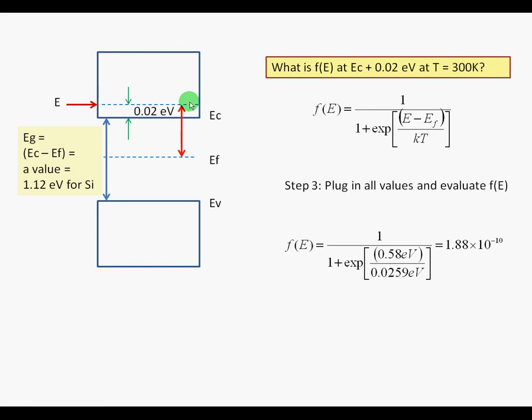The next step is to plug in all of these values and evaluate F of E. 0.58 eV goes in the numerator, 0.0259 eV is kT at 300 K, giving you F of E equals 1.88 times 10 to the minus 10.